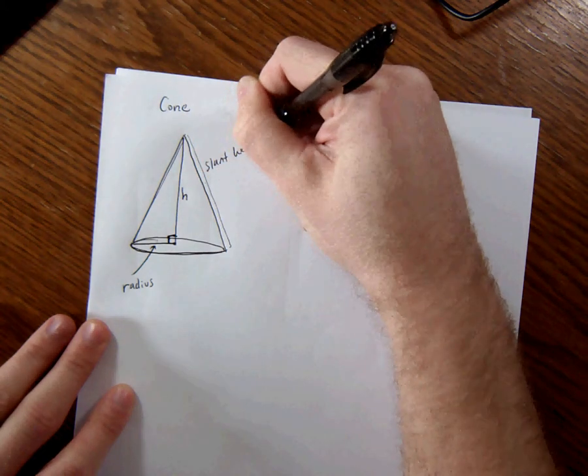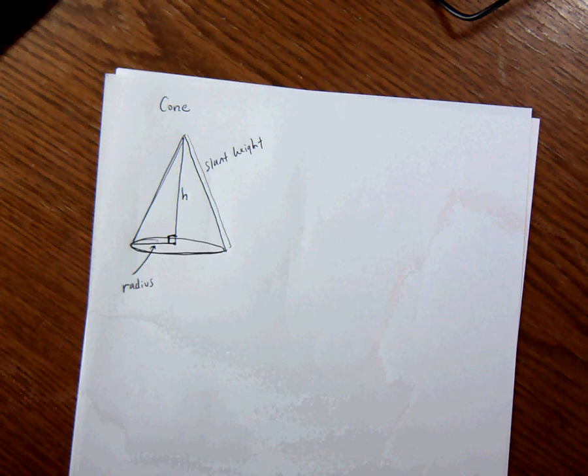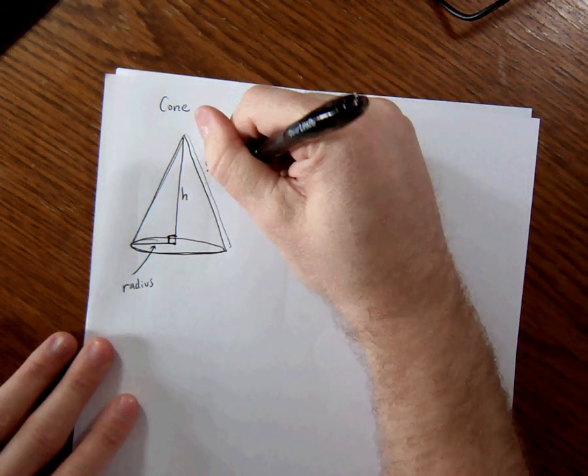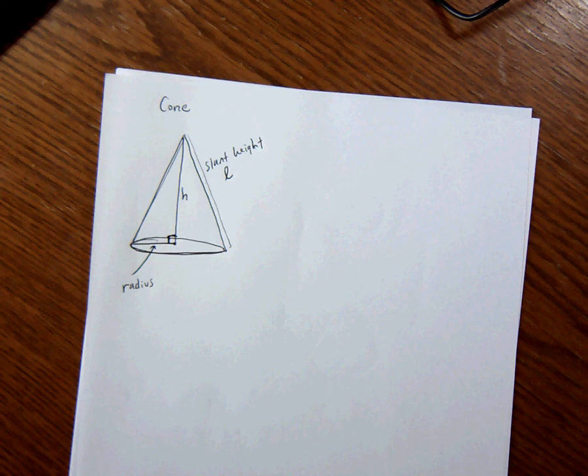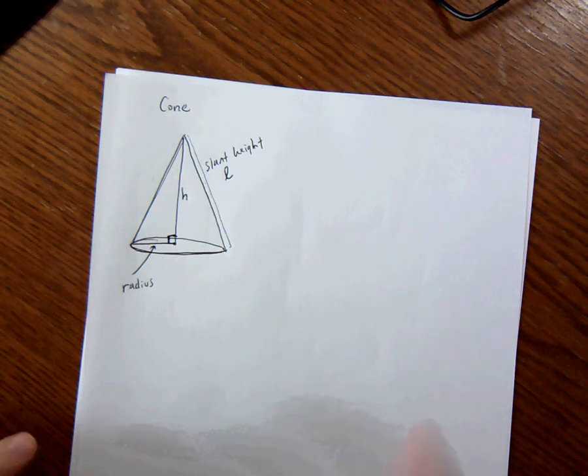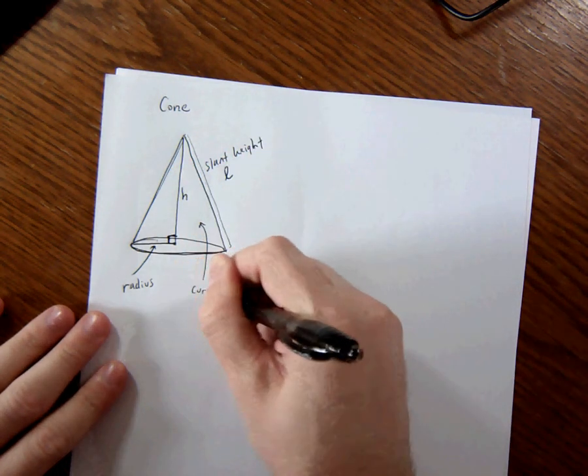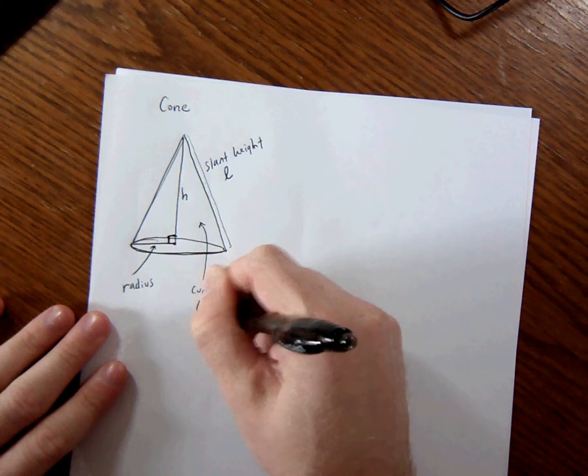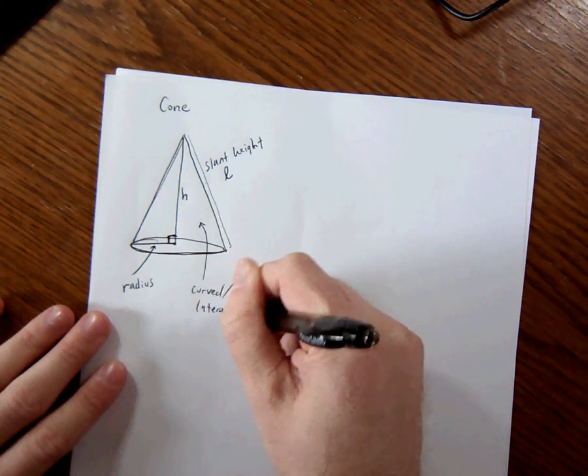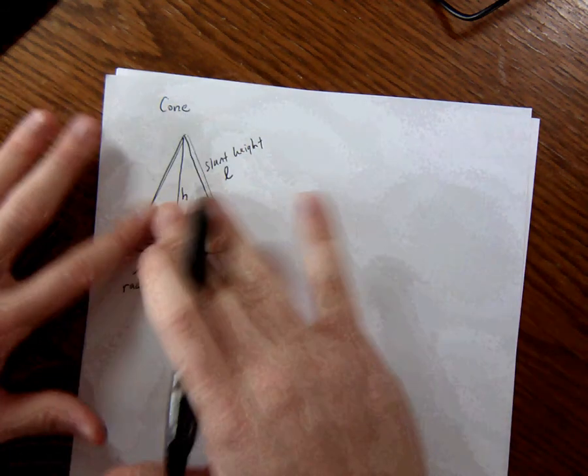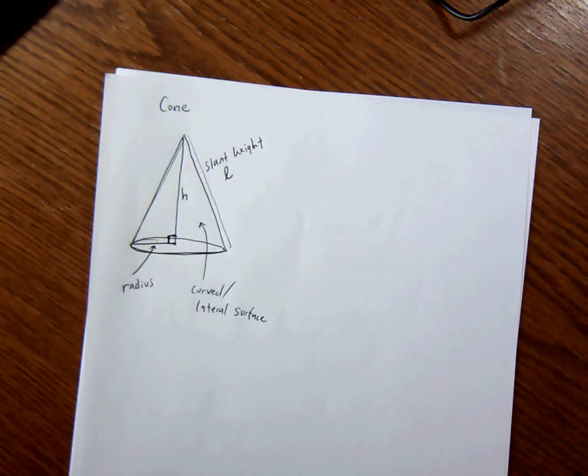This on the side, this length right here, that length right there, that is the slant height. That becomes important when we're doing the surface area and it's actually... We call it L. I don't know why. I should know why, but I don't. So don't ask me. I might look it up later. I don't know at the timing of this video. So that's a slant height and also, just like the cylinder, we're going to call that the curved slash lateral surface area. Okay, talking about the little curved section there. So that's kind of the pieces of a cone.